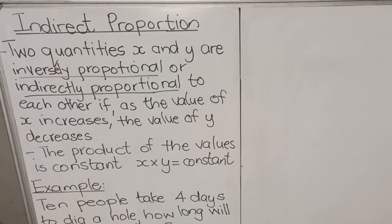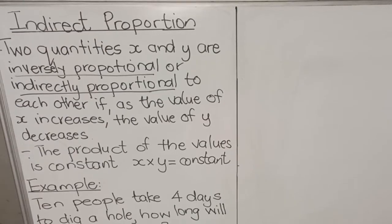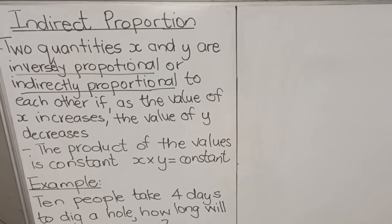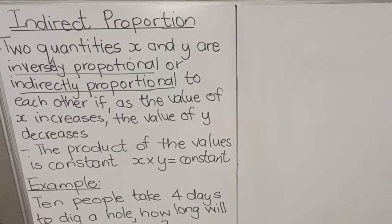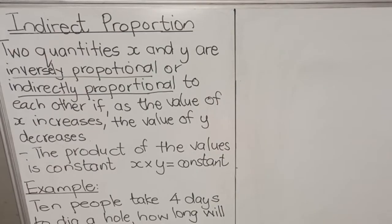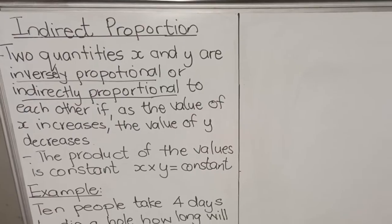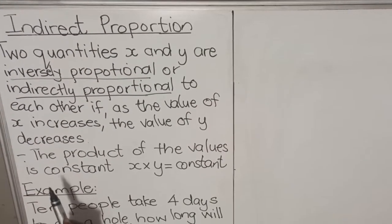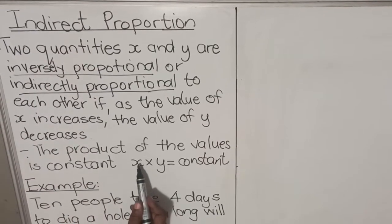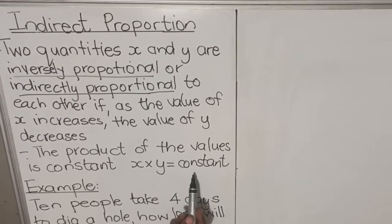As one value goes up, the other one goes down. Where in life would you have that? For example, if you hire people to build a building — the more people you have building that building, the fewer days it will take. With inverse proportion, the product of the values is constant: you take the first amount multiplied by the second amount to get a constant.